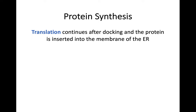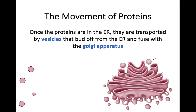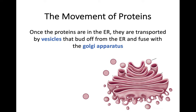After docking has taken place, the ribosome is now at the endoplasmic reticulum and translation will continue. The protein itself is going to be inserted into the membrane, just like we talked about lipids being made in the smooth endoplasmic reticulum. Once the proteins are within the endoplasmic reticulum, they're going to be transported across to the Golgi apparatus, and this is where vesicles become handy. They're going to transport the proteins, budding off from the endoplasmic reticulum and fusing at the Golgi apparatus.